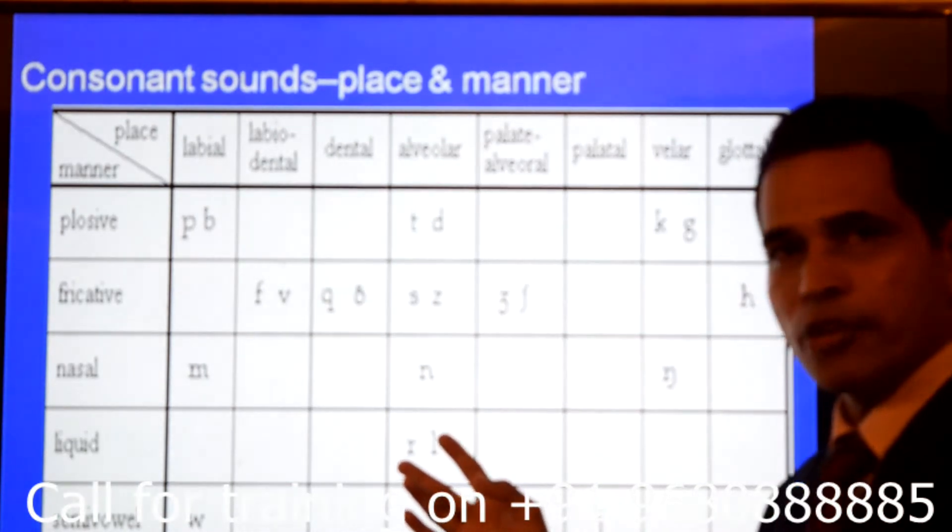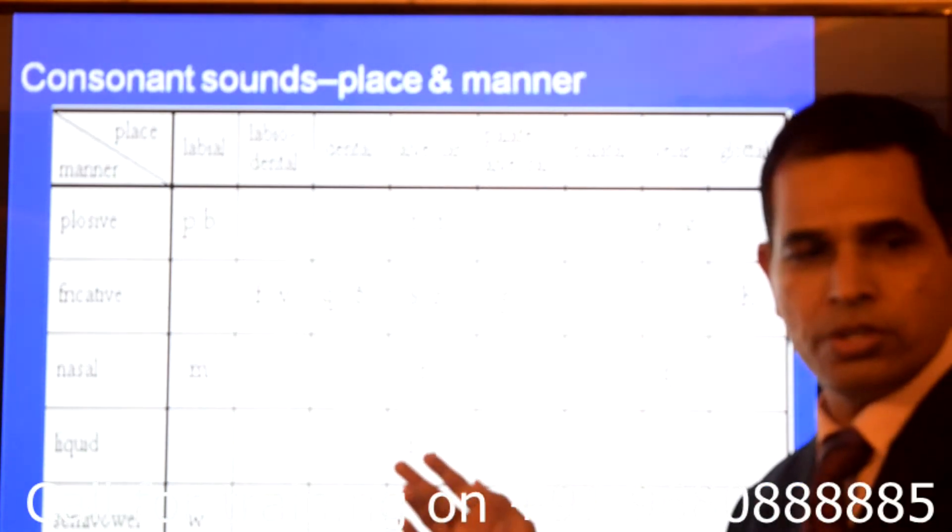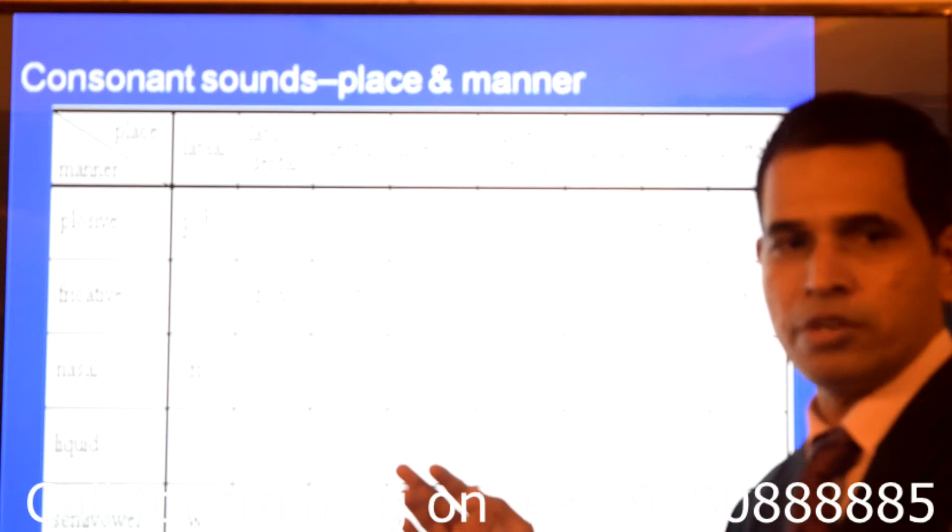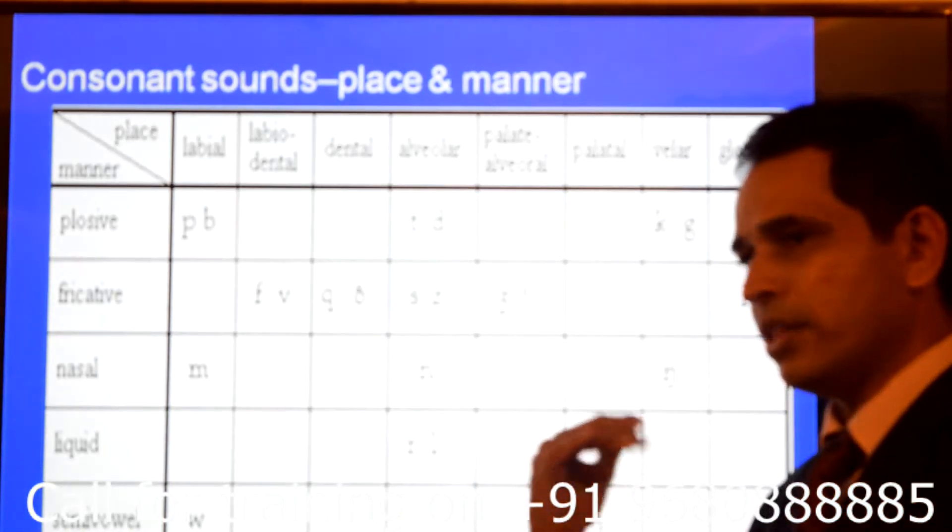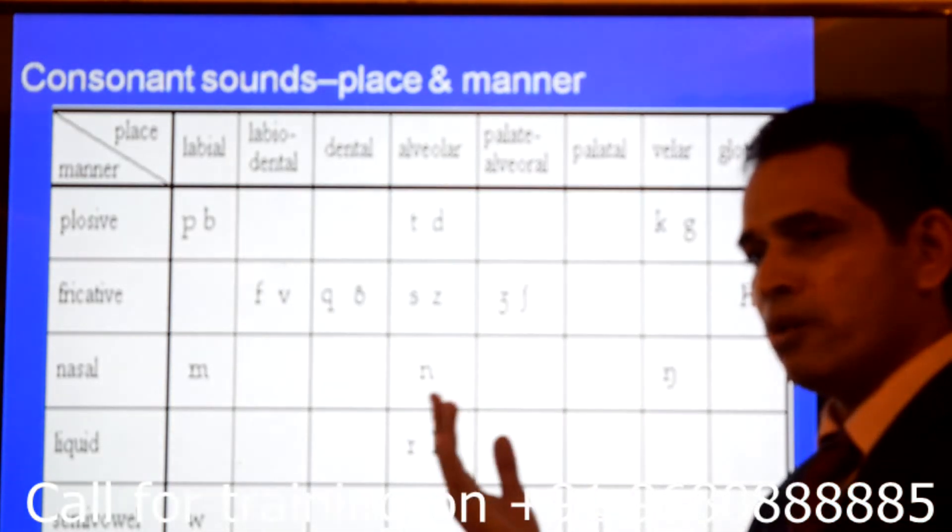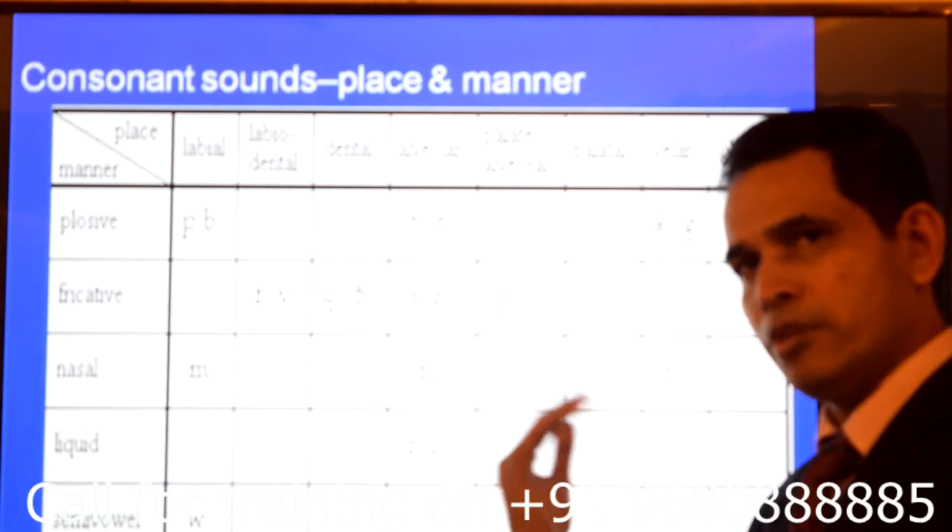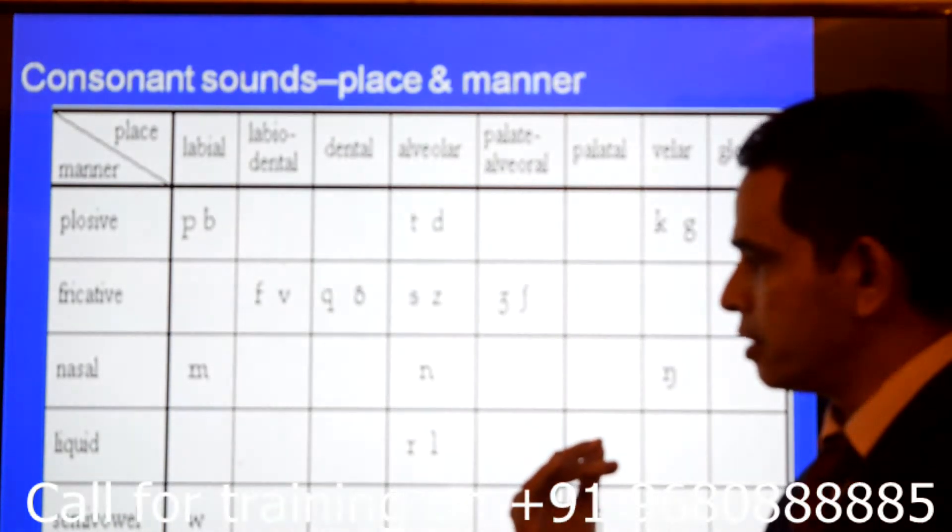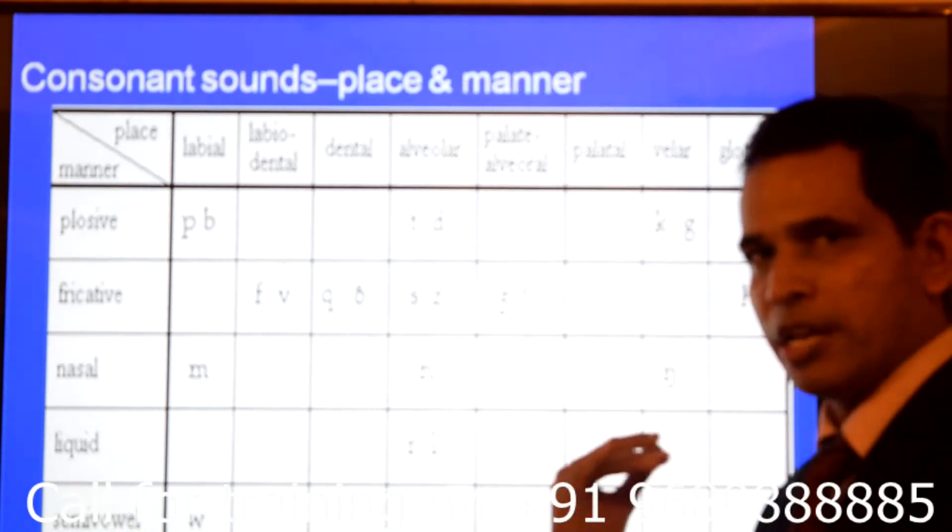These are liquid. Why they are called liquid? Because there is a range. There is a range in which this particular sound can be produced, and that ranges up to one inch in the mouth, in the ra, in the upper palate.